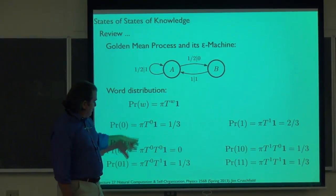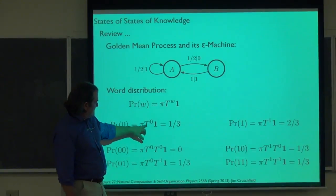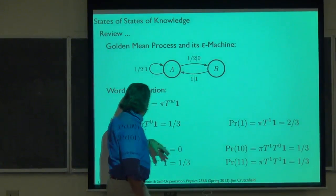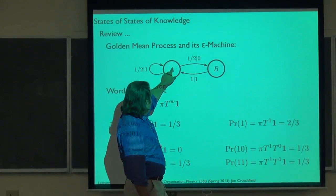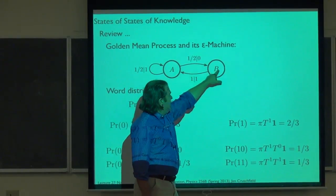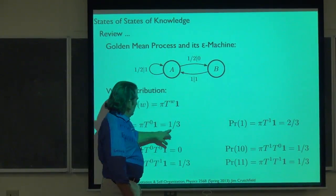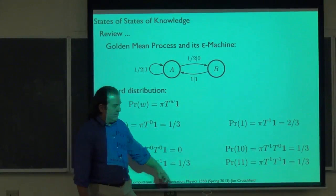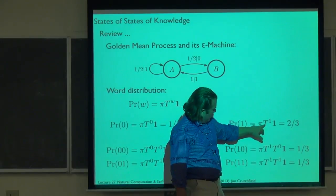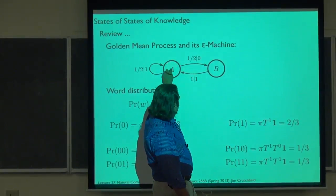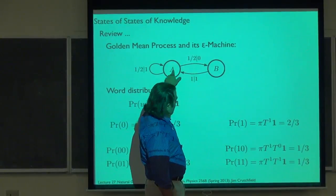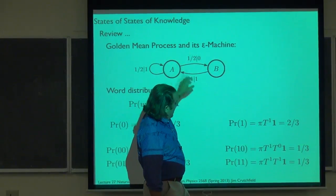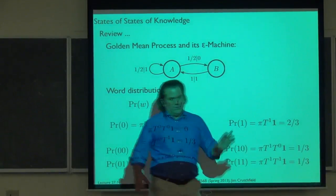We calculate the word distribution starting with the asymptotic invariant distribution, using the product of T_0, T_1 matrices extended to words, then summing with the column-one vector. Simple case: probability of seeing a zero — we're in state A with probability two-thirds, see zero with probability half, contributing one-third. In state B with probability one-third, we can't see a zero. So probability of zero is one-third. Probability of a one is two-thirds by similar reasoning.